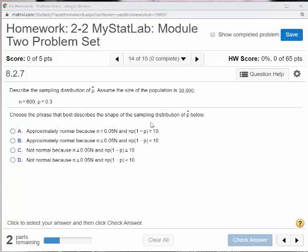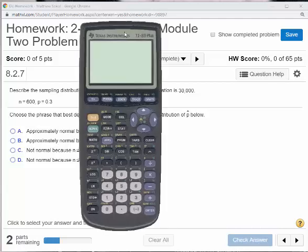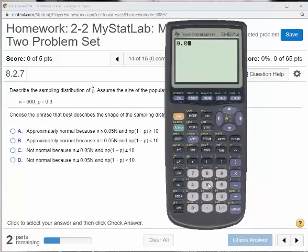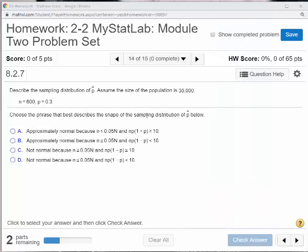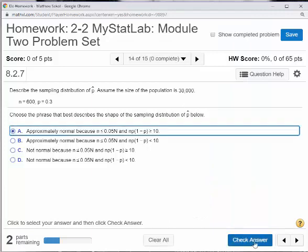Choose the phrase that best describes the shape of the sampling distribution of p-hat. Ultimately what we're looking for is to show that p-hat is normal, and the reason it needs to be normal is the following reasons. The sample size n has to be less than 5% of the population size. Well, if we look at what 5% of the population size is, it's 1500. Our sample size is less than that, so that works out. And then also if you take 600 times p, 0.3 times 1 minus p, that's 126. That's greater than or equal to 10. So that's what we want.